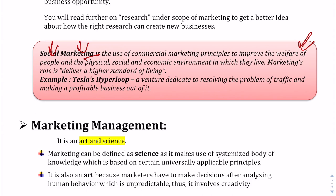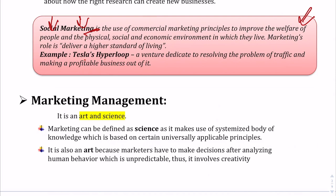For example, if a company gets involved in building a hospital with affordable medical treatment or a school with affordable education for poor children, they are improving public welfare and engaging in social marketing. Tesla entered a venture called Hyperloop, which is dedicated to resolving the problem of traffic congestion. Since it aims to solve a societal problem, it comes under social marketing.